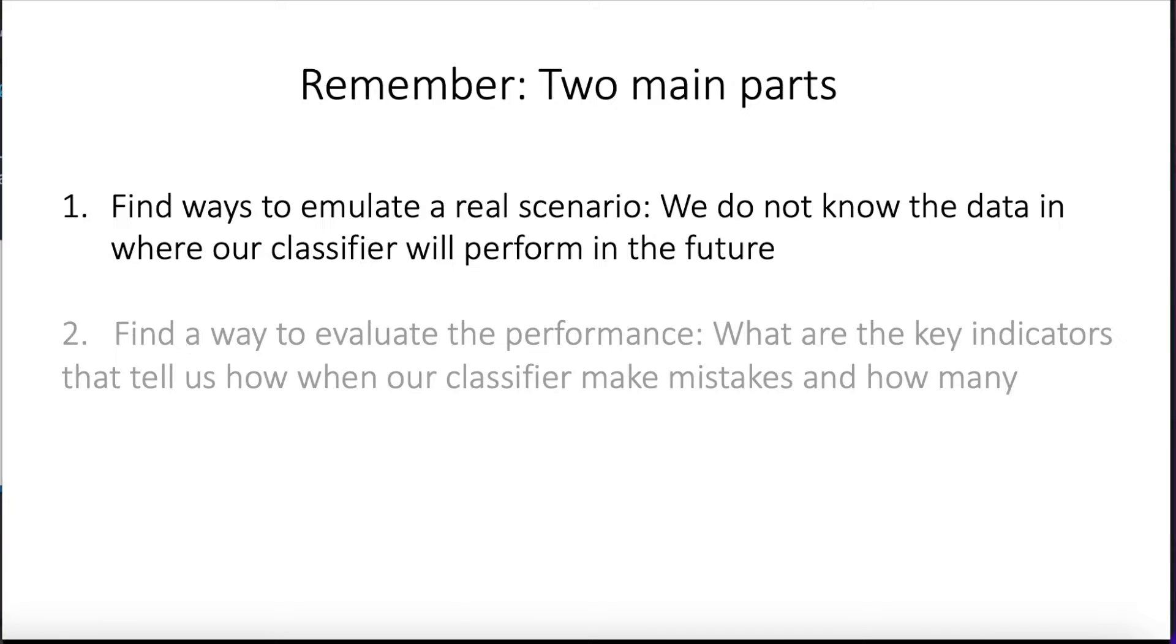Hi, everyone. Continuing the previous video, recall that we are basically relying on two main different aspects to evaluate a classifier. The first is to figure out a way to emulate the future by trying to hold out some of the data such that the classifier trains in another set, so we mimic somehow the general case where we're going to have to classify the data points that weren't seen during the training phase.